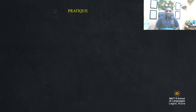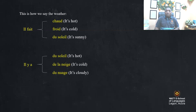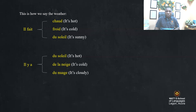Let's practice this. Il fait chaud — can you repeat after me? Il fait chaud. Il fait froid. Il y a du soleil. Il fait du soleil. Il y a de la neige. Il y a du nuage.